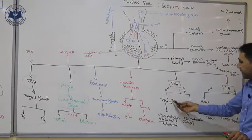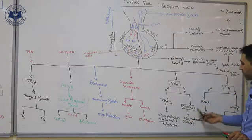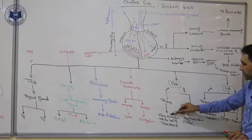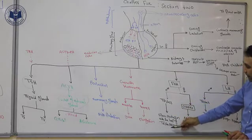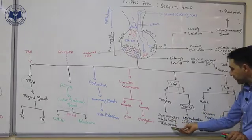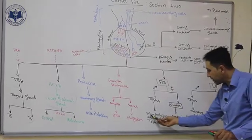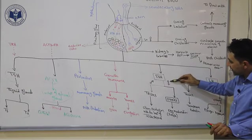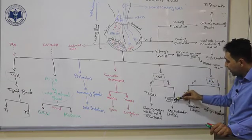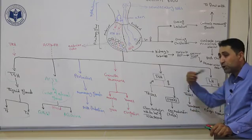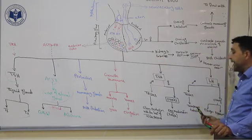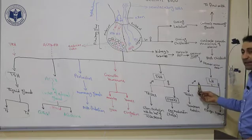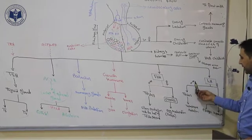The target cells of FSH and LH are found in the gonads — testes in males and ovaries in females. FSH stimulates the testes of males to produce sperm, but with the help of testosterone, so without testosterone the testes cannot produce sperm. In females, FSH targets the ovaries to mature their follicles containing eggs.